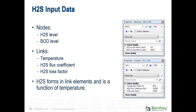For the input data for this kind of simulation, you can add directly to a node the H2S concentration or the BOD initial concentration. All this information is stored in the water quality alternative. You can also add data on conduit elements — specifically temperature, the H2S flux coefficient, and the H2S loss factor. The H2S forms in link elements and is a function of temperature.